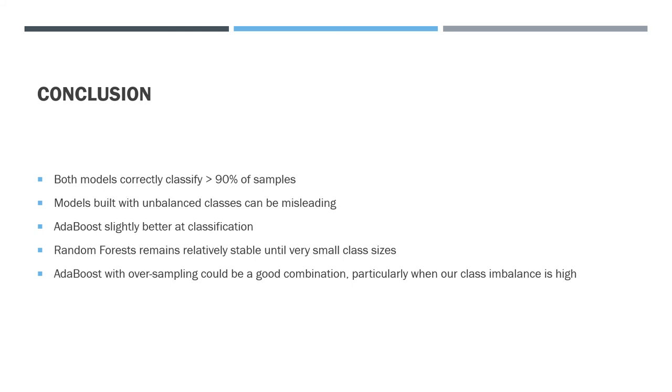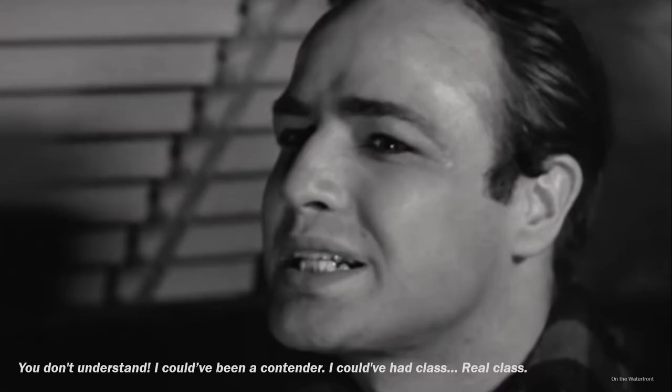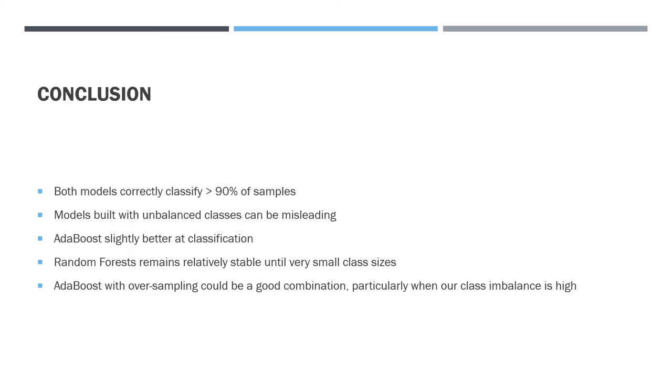AdaBoost seems to be stable to oversampling, while Random Forests is only stable for ranges that are relatively close, down to about 70-30. Coming back to our original question, for unbalanced classes, will AdaBoost come to the rescue? Well, I think the jury is still out. However, I think AdaBoost is a contender, and we should do more work in this area to see how useful it can be. Thanks for listening.